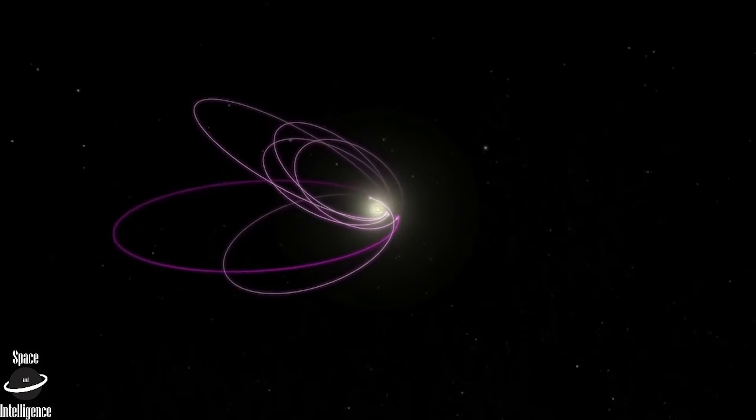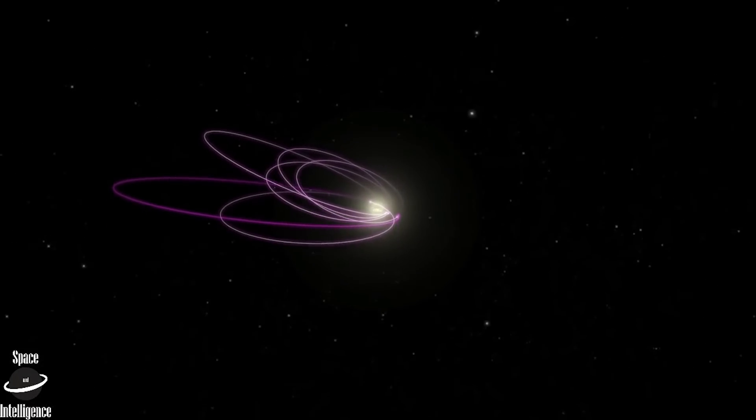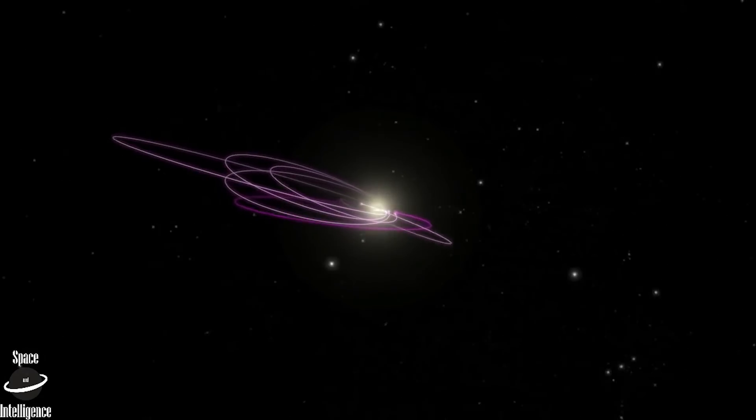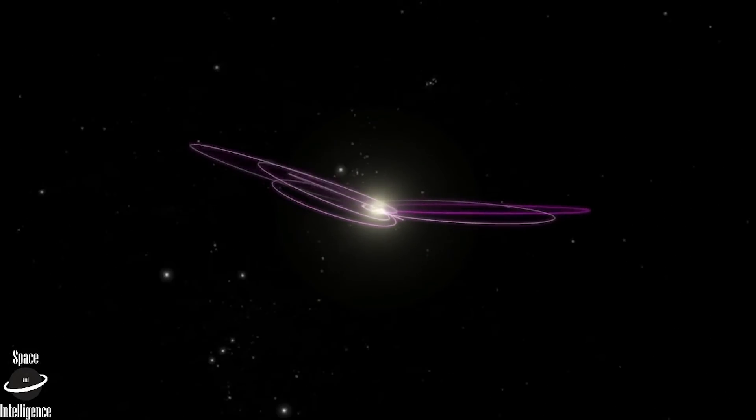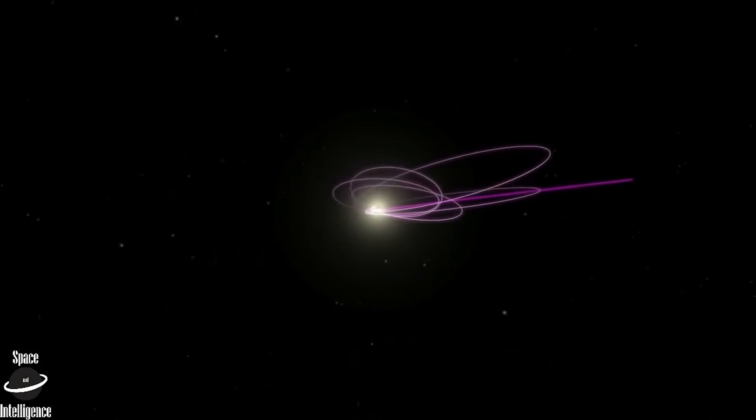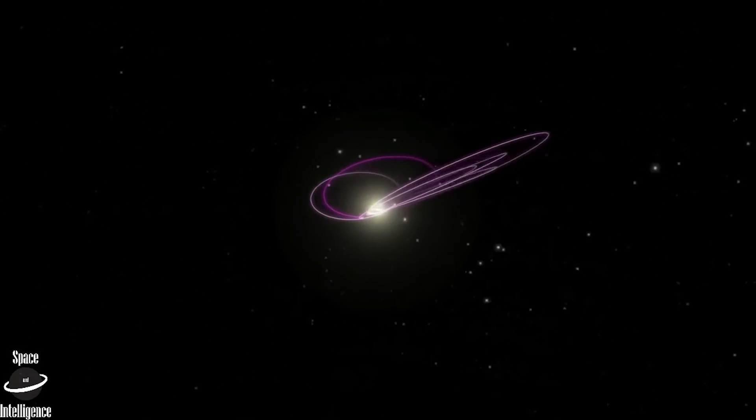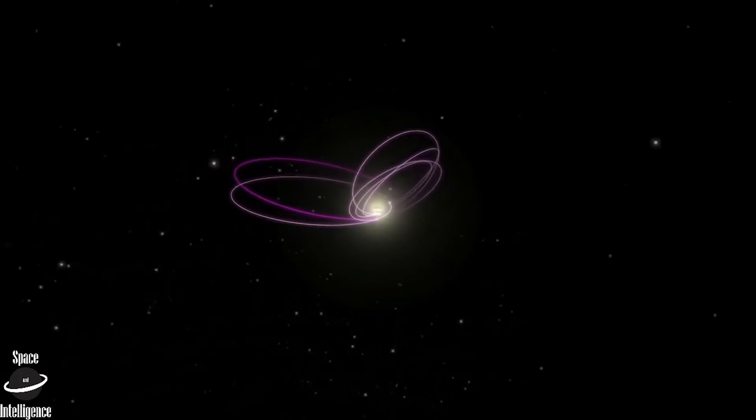Planet Nine was discovered when Brown and Batigan noticed a cluster of objects that had a strange orbit outside of Neptune. They believe that there's only a 1 in 15,000 chance that the clusterings could be a coincidence. Instead, they think that a planet with a mass of 10 Earths has actually altered the orbits of those objects.